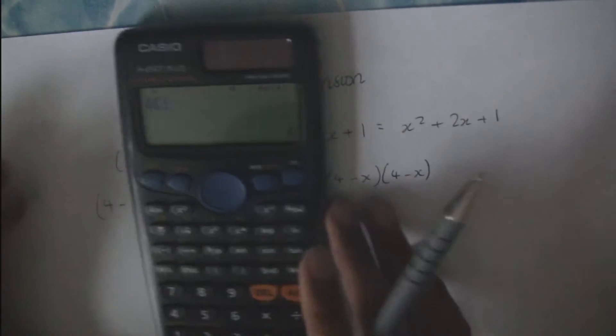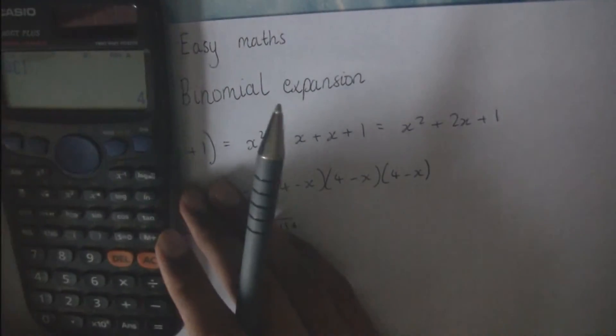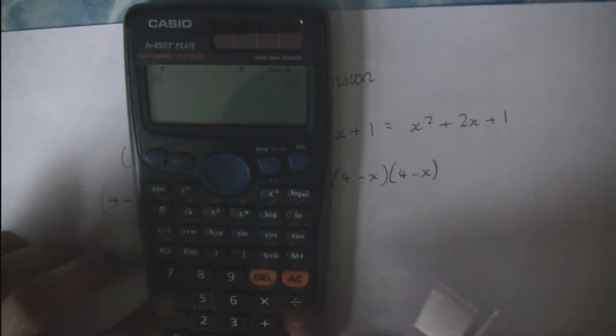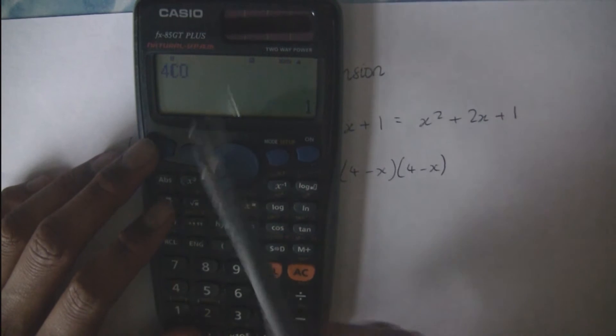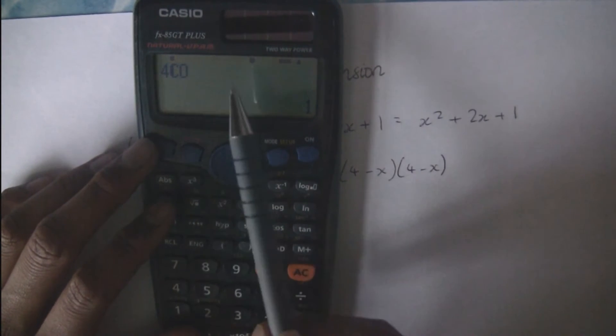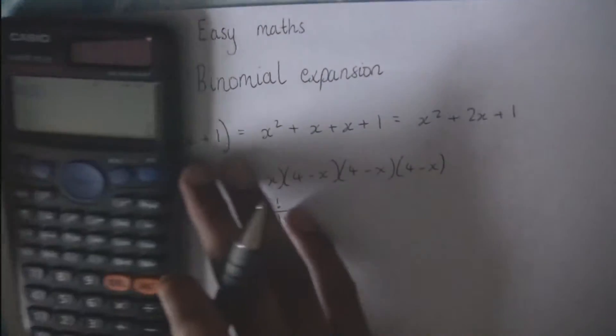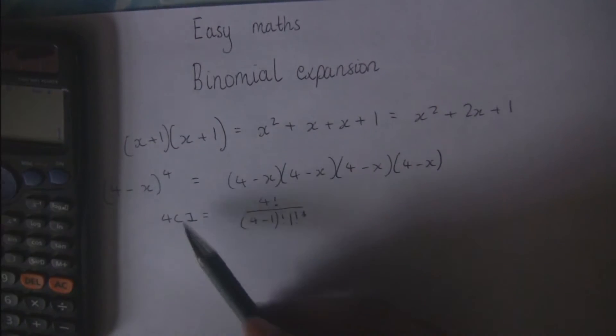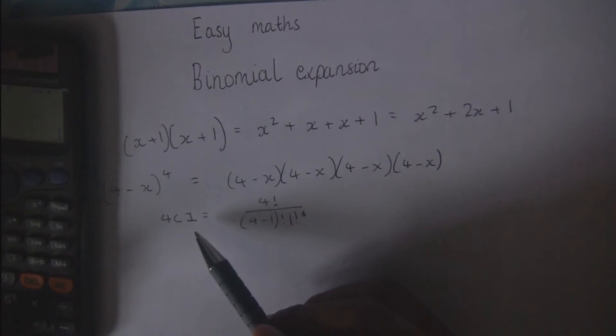The only exception to note is that 4C0 is always going to be 1. Whatever number you put before the C, as long as you put a 0 after it, it will always be 1. That's just something you need to know. But as I said, you'll be allowed a calculator in C2, so you don't really need to know how this works in detail — you just need to use the C function on your calculator.